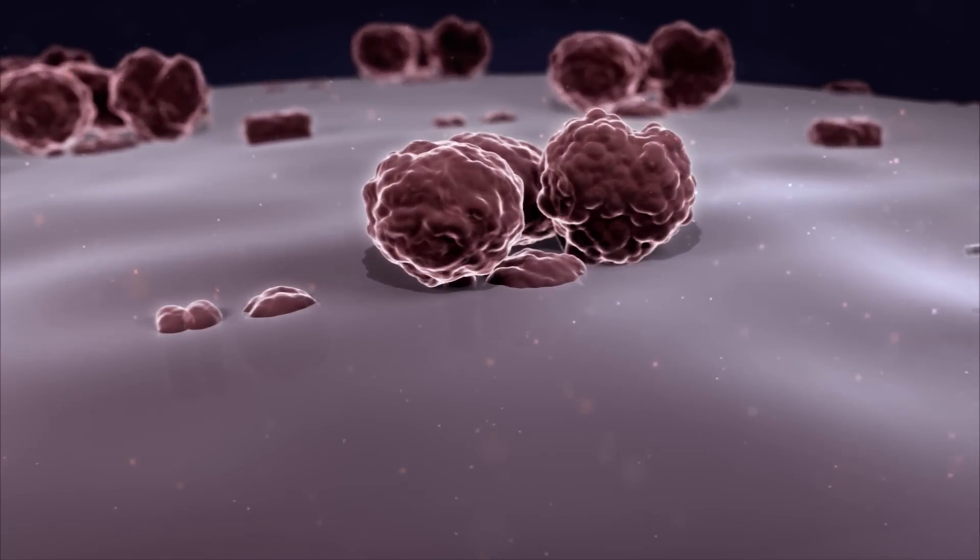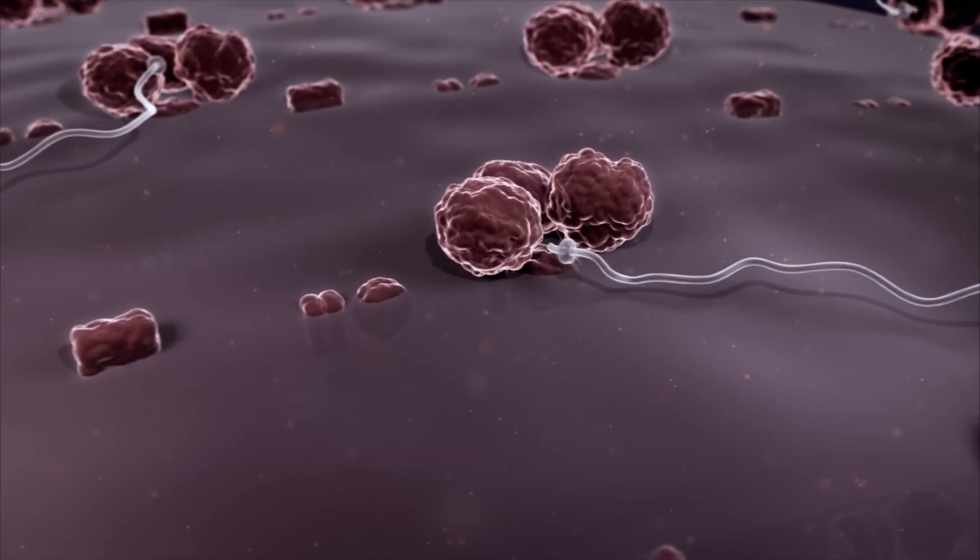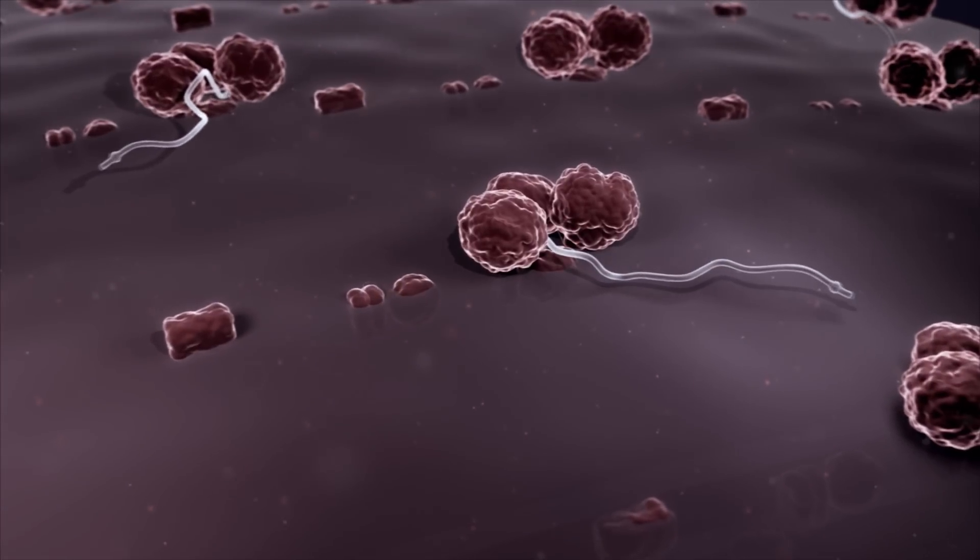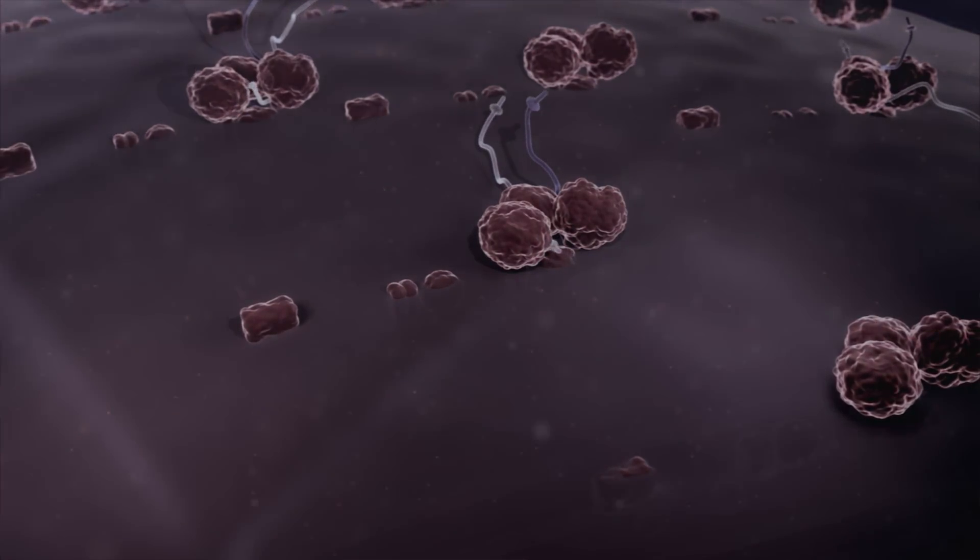The non-structural proteins, together with host proteins, form the replication complex that facilitates the production of new viral RNA. The newly formed RNA is then packaged and assembled into new viral particles, which are then released from the cell to infect other hepatocytes.